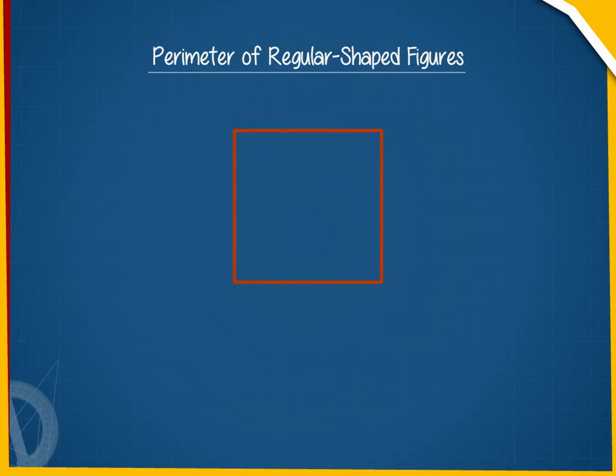Similarly, a four-sided figure like square will have the perimeter as the length of its sides multiplied by 4. The perimeter of this square is equal to 4 × 4 cm, which is equal to 16 cm.